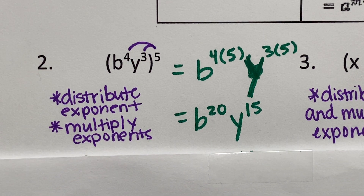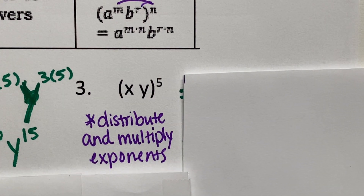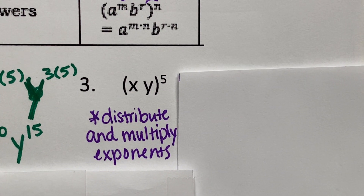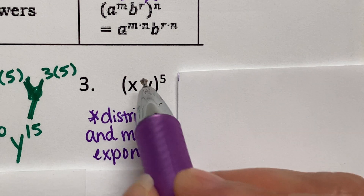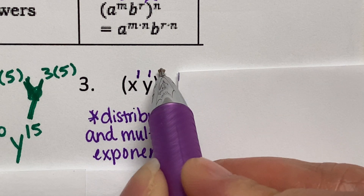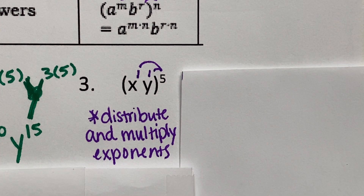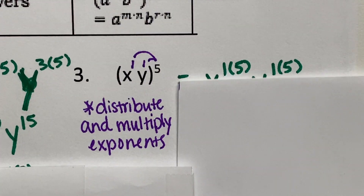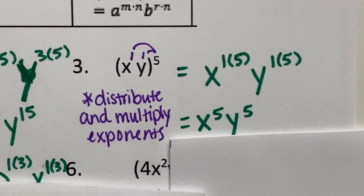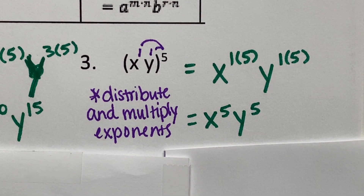In the next example, we have x times y to the fifth power. Recognize that x has an exponent of one and y has an exponent of one. Distribute and multiply five times one and five times one to each of those exponents. It simplifies to x to the fifth, y to the fifth.